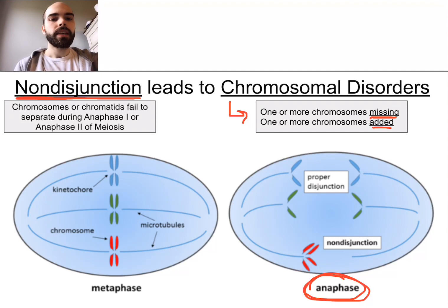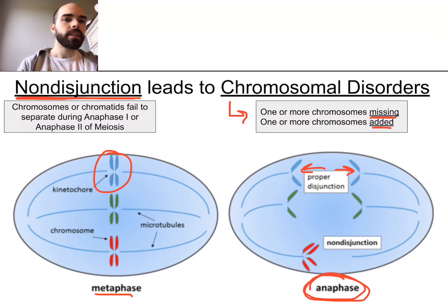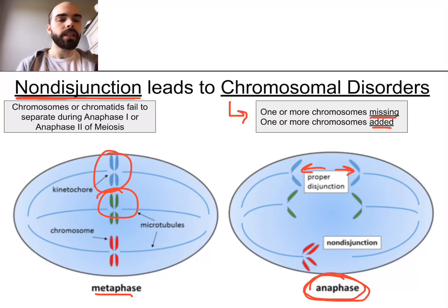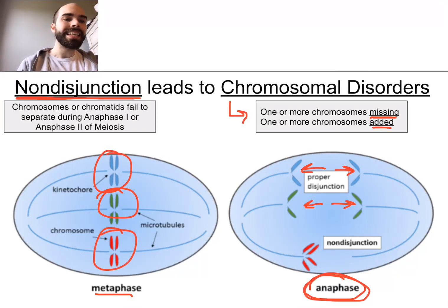Here's what happens. Normally during metaphase, the chromosomes line up in the middle, and then in anaphase they separate. The blue chromosome separated normally — the chromatids separated from one another. Same thing for the green chromosome — during anaphase the chromatids separated normally. But if you look at the red chromosome, it didn't separate — it failed to separate. When that happens, we call that non-disjunction.